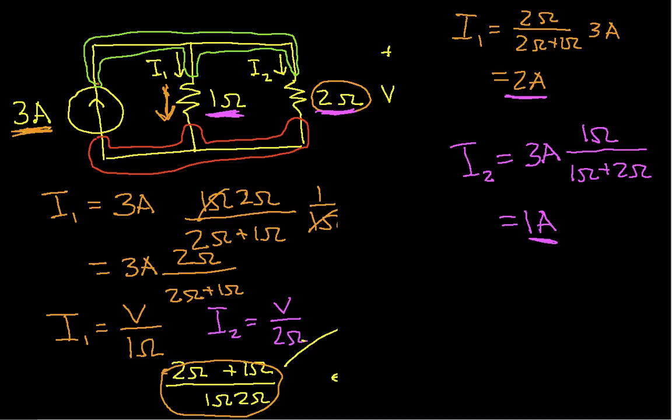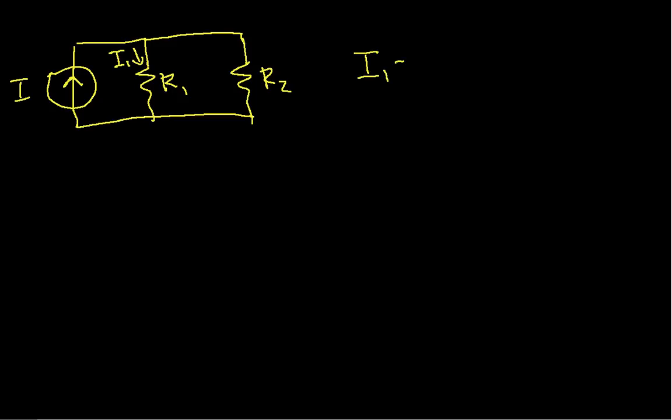So that basically gives us the current divider. And what I'll do now is rewrite it in a nice tidy form. So I have some current here, which I'll just call I. I have a resistor R1 and a resistor R2. And if I want to know the current through the R1, I1 is my current times R2 over R1 plus R2. That's the current divider.